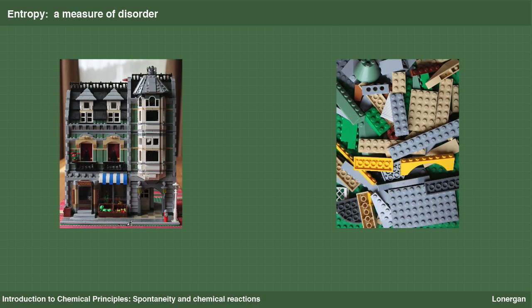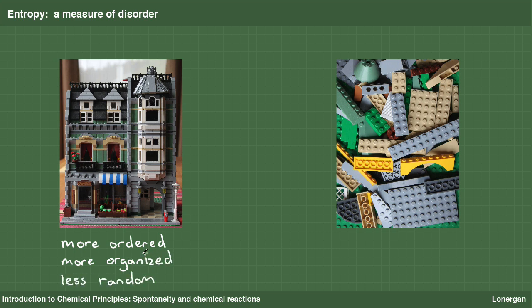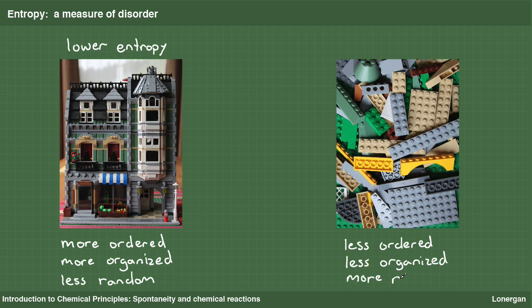It is worth saying a word or two more about entropy. Although it does not rigorously apply to the assembly of LEGO building bricks, they provide a helpful visual to further introduce entropy. The bricks in the picture on the left are more ordered than those on the right — more organized, less random — analogous to a lower state of entropy. The bricks on the right are less ordered, more random, analogous to a state of higher entropy.